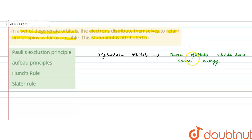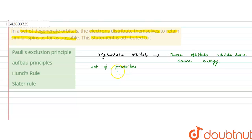First of all, what are degenerate orbitals? Degenerate orbitals are those orbitals which have the same energy. For example, in a p orbital set, there are three p orbitals: px, py, and pz.